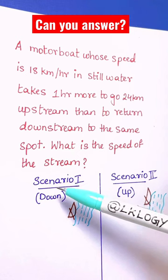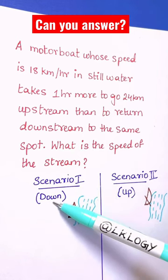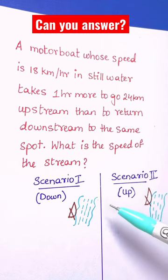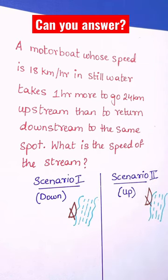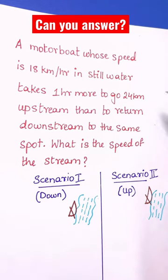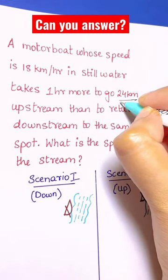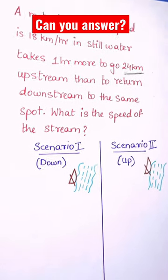We have two scenarios: scenario one is downstream, scenario two is upstream. Let's write down what is given to us — 24 kilometers is the distance traveled. So I need to write that down.